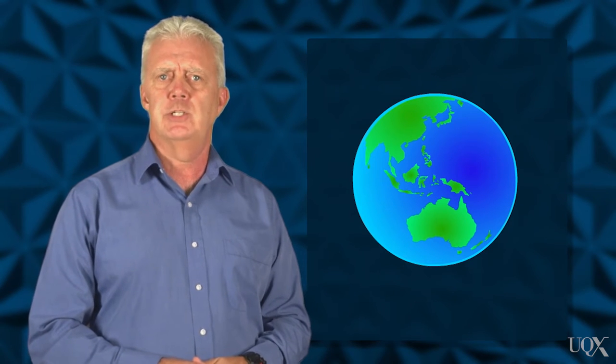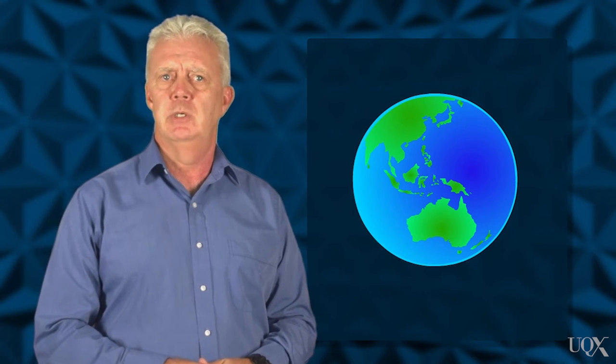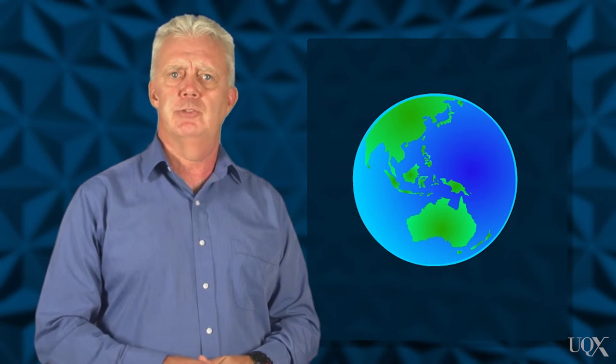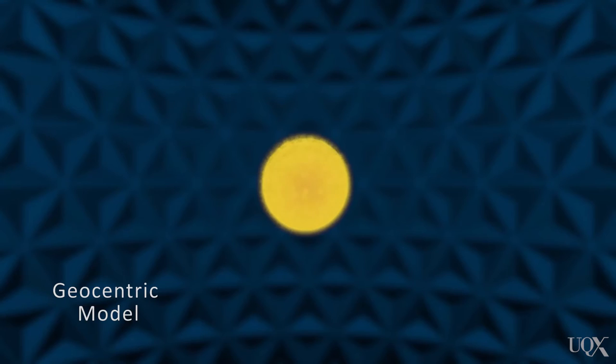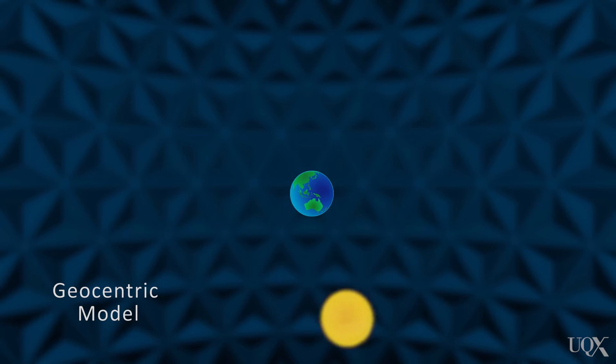When ancient philosophers and scientists shaped their ideas without the benefit of experimentation, it often resulted in misconceptions about the natural world. 2,000 years ago Ptolemy imagined the Earth at the centre of everything and therefore that the Sun revolved around the Earth. This is called the geocentric model.